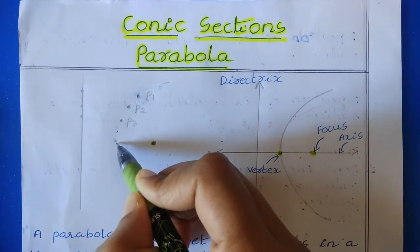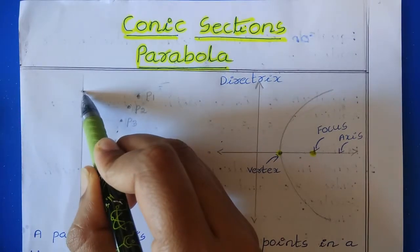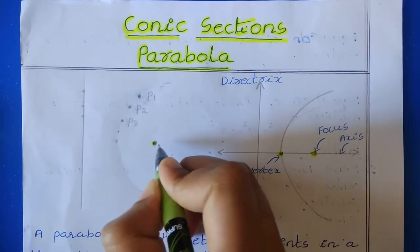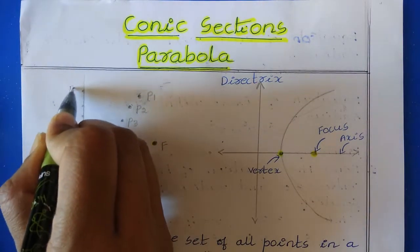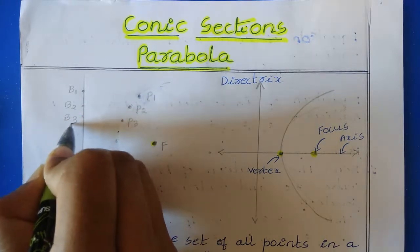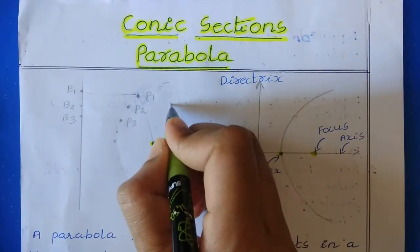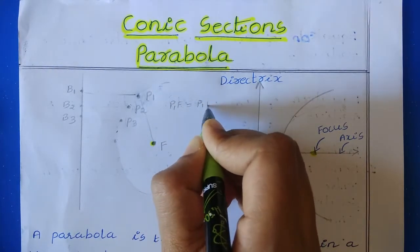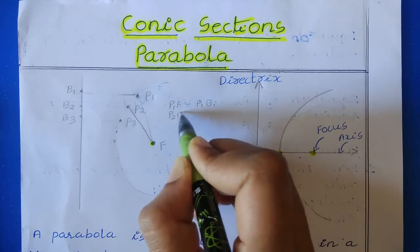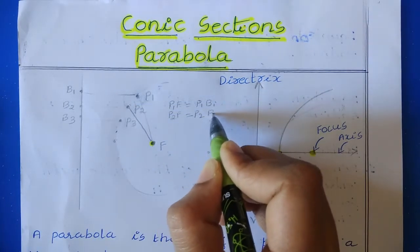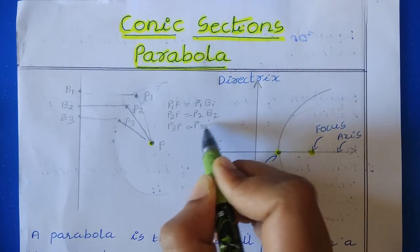Some set of points I will take which are equidistant from this fixed point to this point and from this fixed line to this point. For example, let us say that this fixed point is F and here on the fixed line we have points B1, B2, B3. If I find the distance: P1F is equal to P1B1. In the same way, P2F is equal to P2B2. Then, P3F is equal to P3B3.